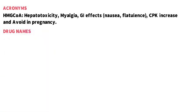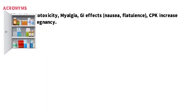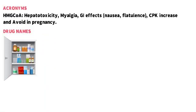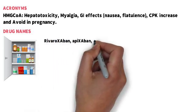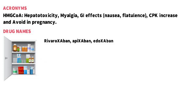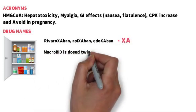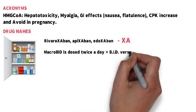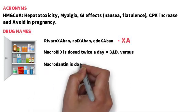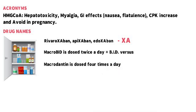Next is drug names. Drug companies often name drugs with stem words that hint at their class or mode of action. For example, rivaroxaban, apixaban, and edoxaban are direct factor Xa inhibitors as denoted by the stem Xa in their names. Macrobid is dosed twice a day or BID versus macrodantin is dosed four times a day. Pay attention to the drug names when you're studying to see if you can spot some of these stems.